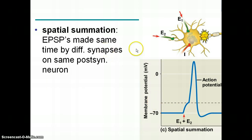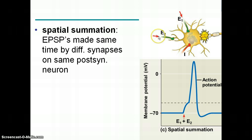Spatial summation works as well because dendrites are like branched trees — there are several different areas of input where neurons can send in excitatory potentials. If you have different neurons bringing in excitatory potentials to the same post-synaptic neuron and they hit at about the same time, that can cause sufficient depolarization to create the action potential at the axon hillock.